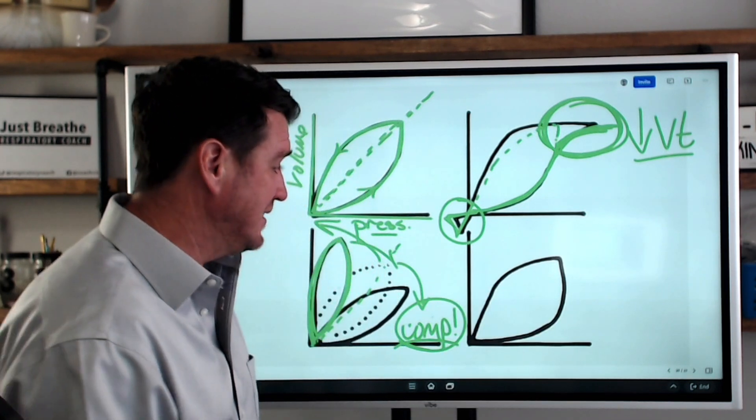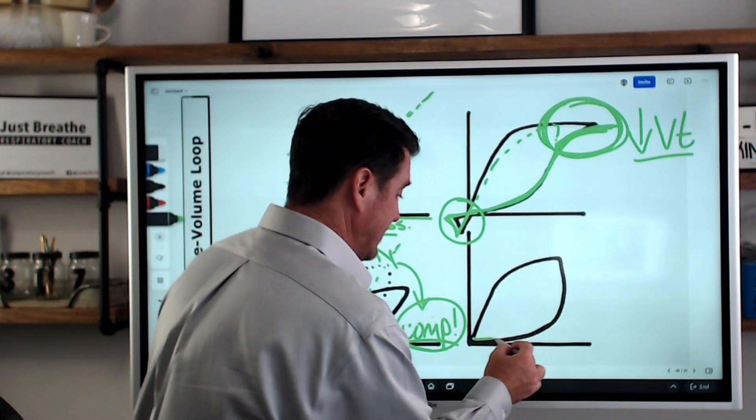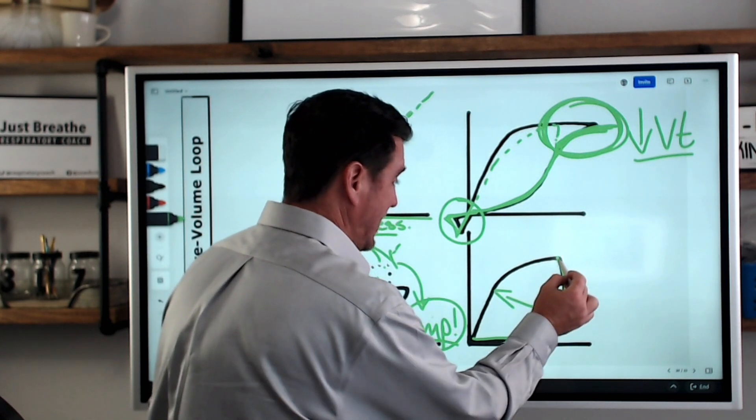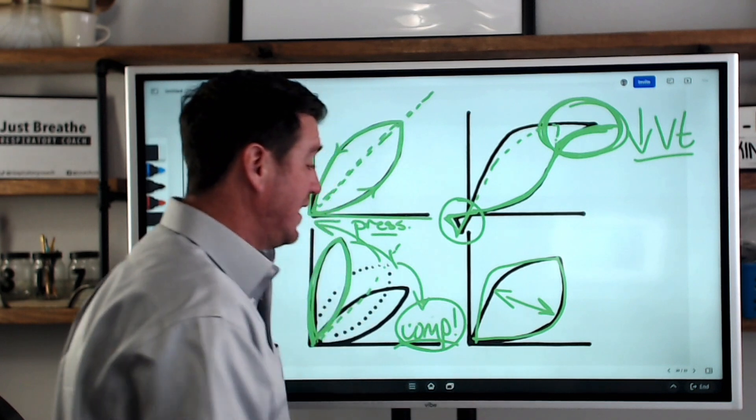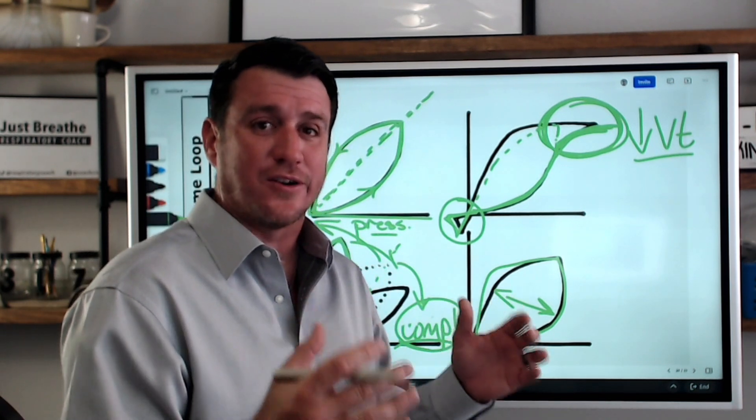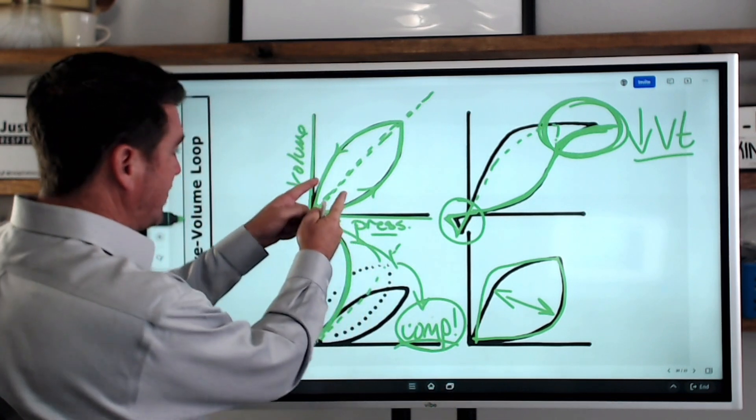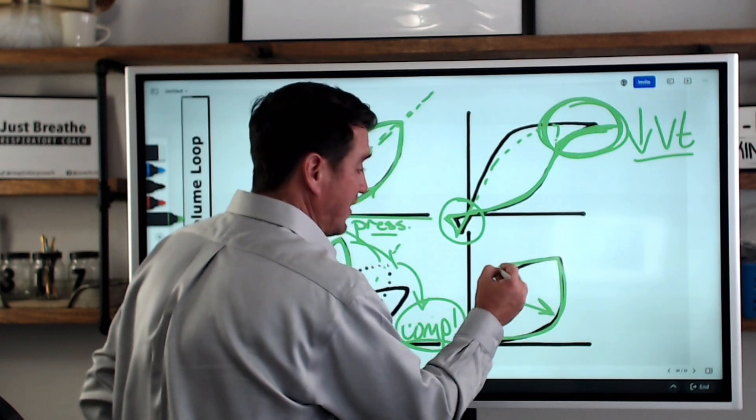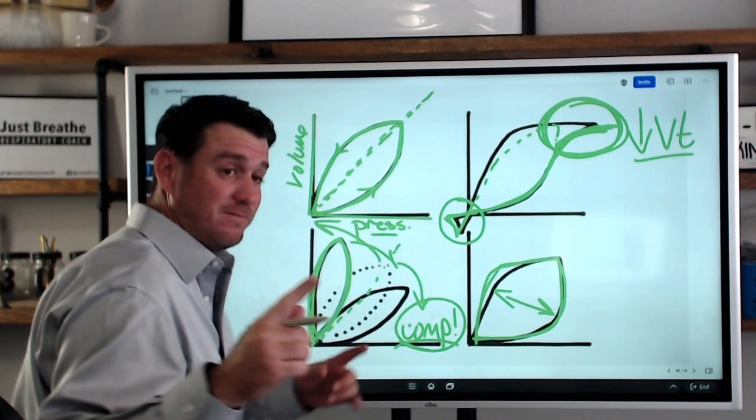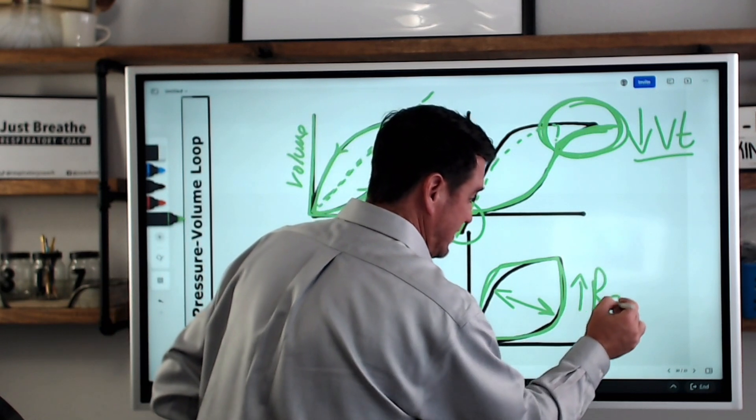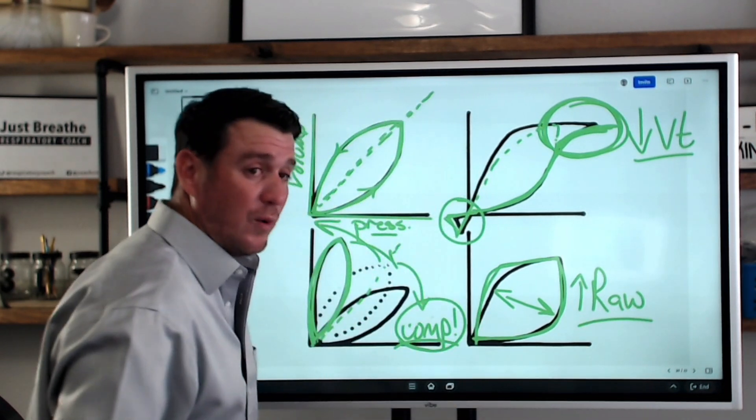Now, the last thing we want to talk about here is if you ever see this protrusion on the front side right here or the backside, you can come back and kind of do like this. Either way, if the pressure volume loop gets wider. Okay, so if you compare this loop to this loop, you would agree that this loop is much wider than this loop. That's because this person here has an increase in airway resistance.